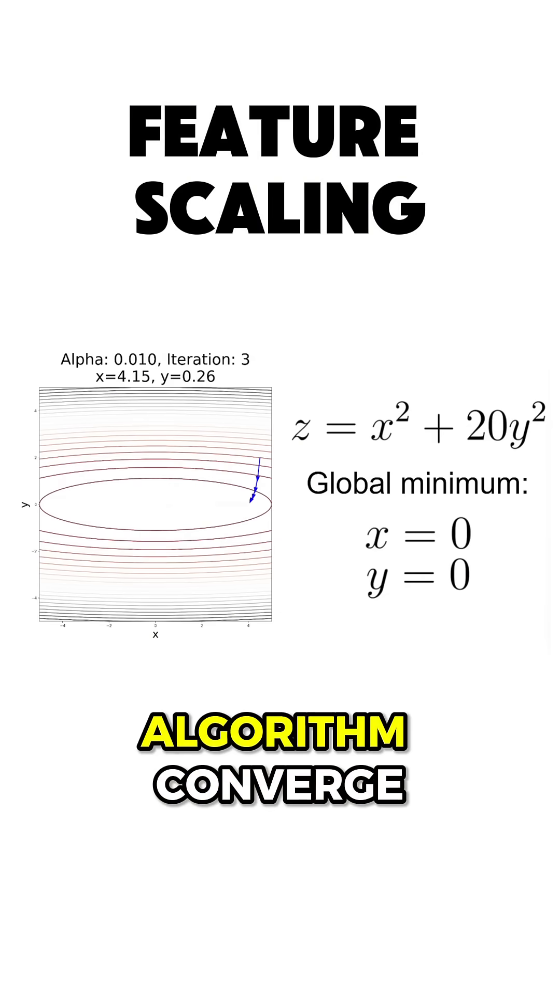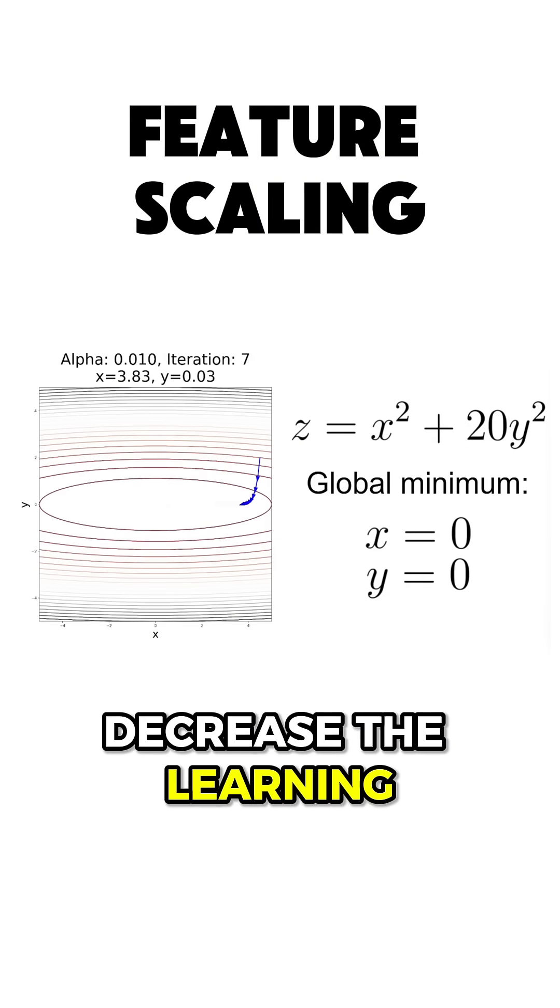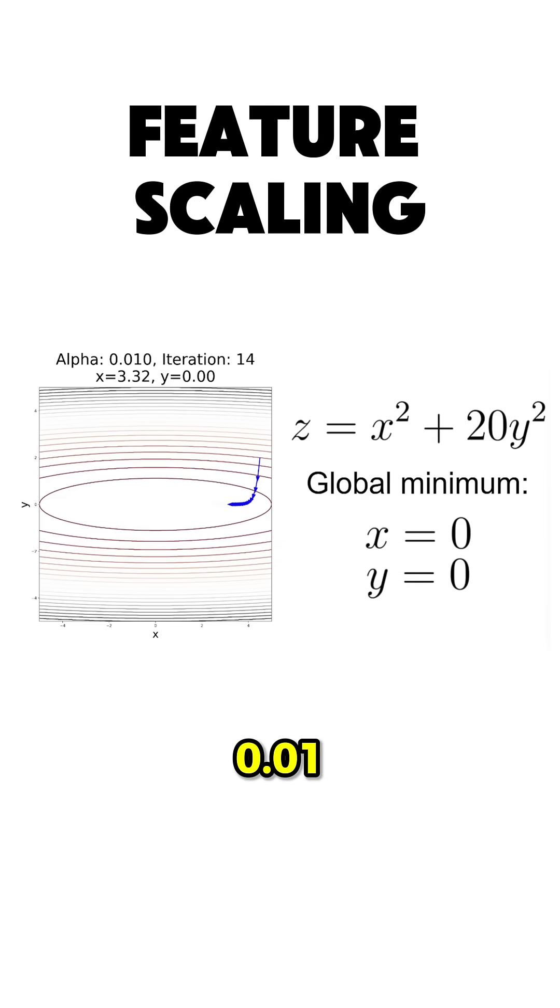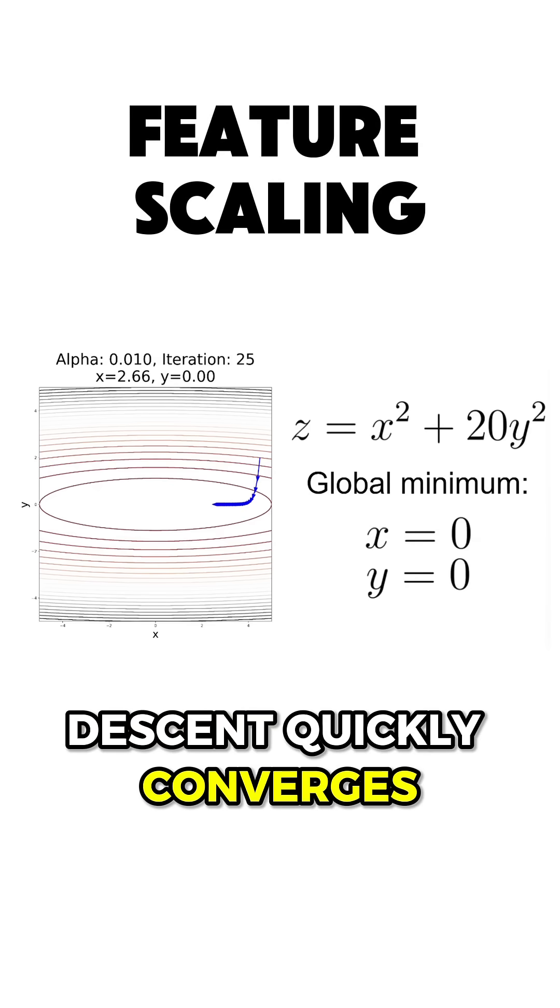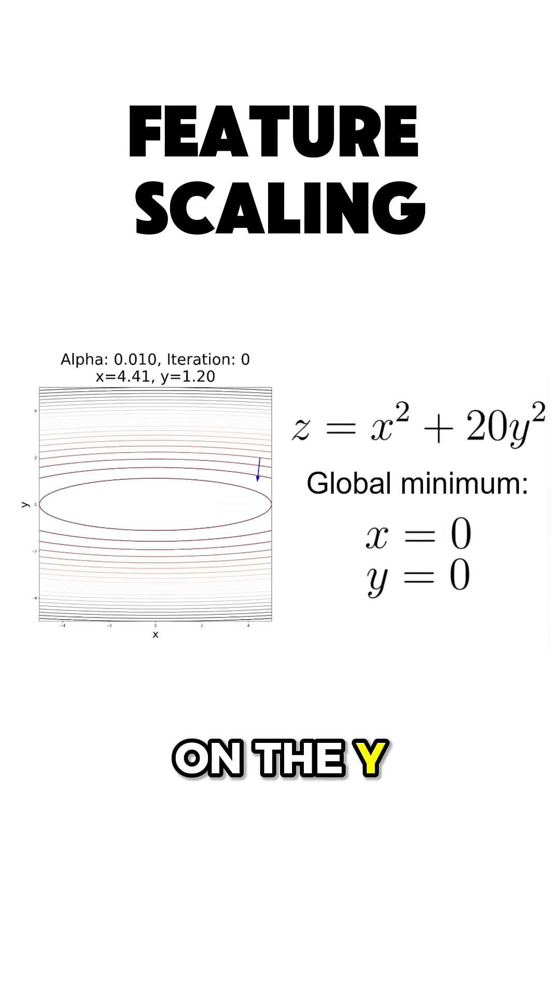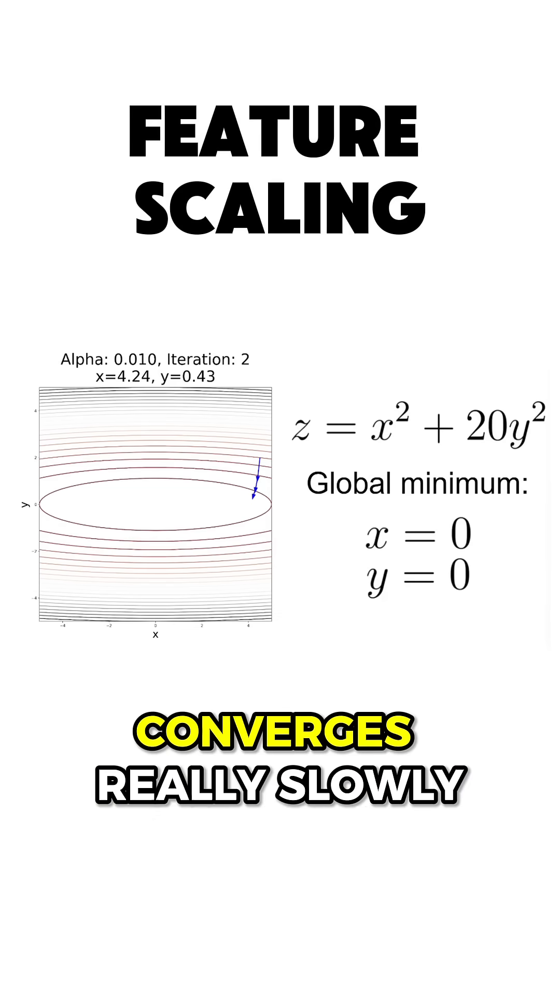To make the algorithm converge, we have to decrease the learning alpha even further, let's say to 0.01. Now, this learning rate is tuned for the y-dimension, and as you can see, the gradient descent quickly converges to the global minimum on the y-axis. Unfortunately, on the x-axis, the learning rate is too small and the algorithm converges really slowly.